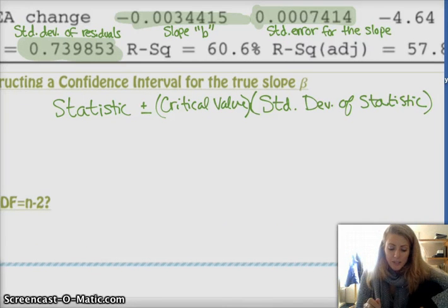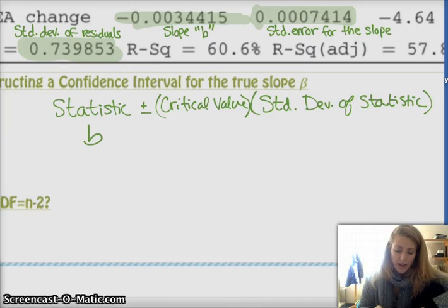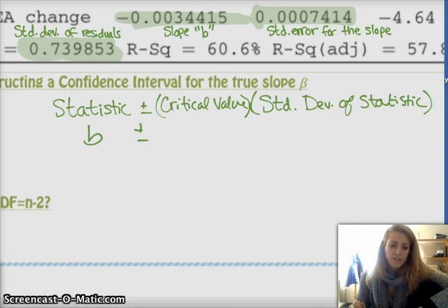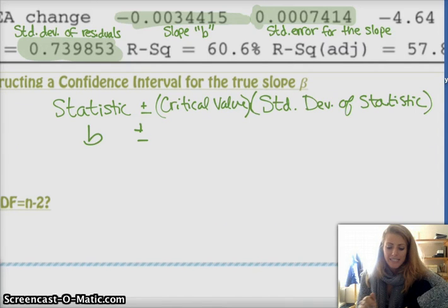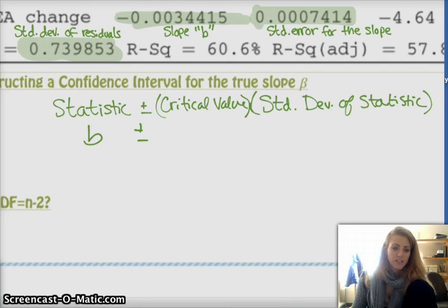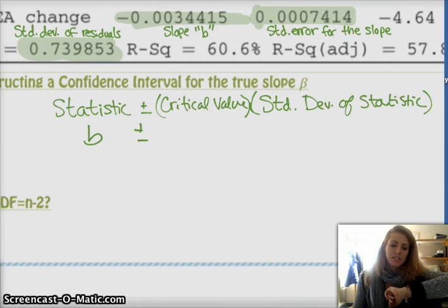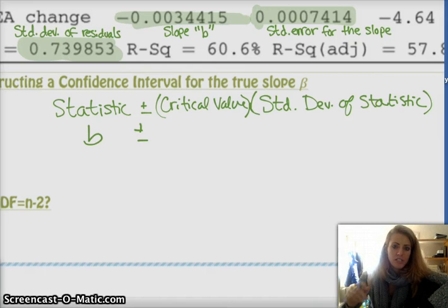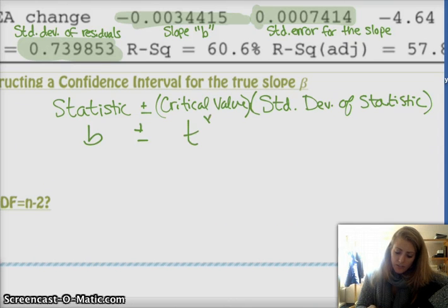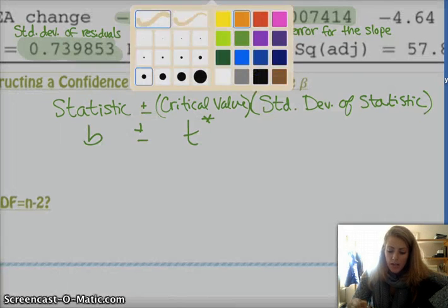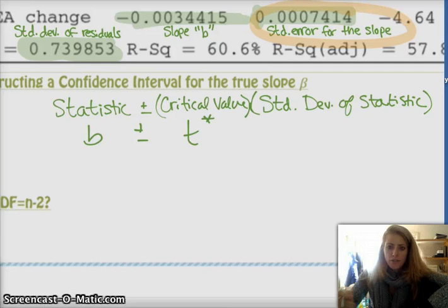And in our case, our statistic is B, the slope that you have in your sample. And then your critical value, just like means, you're going to be using T because, again, similar to means, the standard deviation of a sample is very different from the standard deviation of the population. So, you need to have a little wiggle room. It's not really close to a normal curve. So, you have to use the T distribution instead. So, you have T star as your critical value. And then the standard deviation of the statistic is that standard error of the slope.